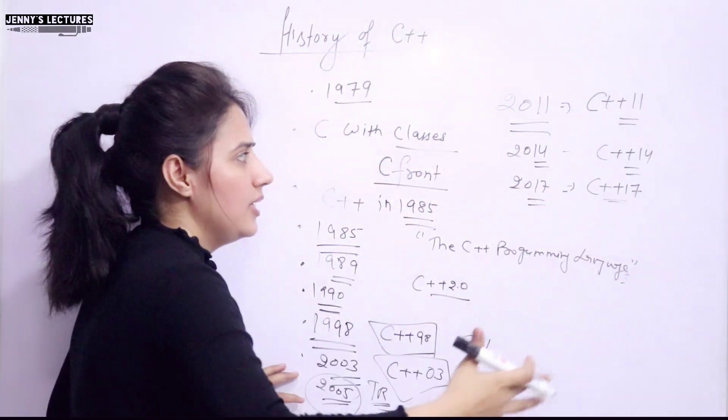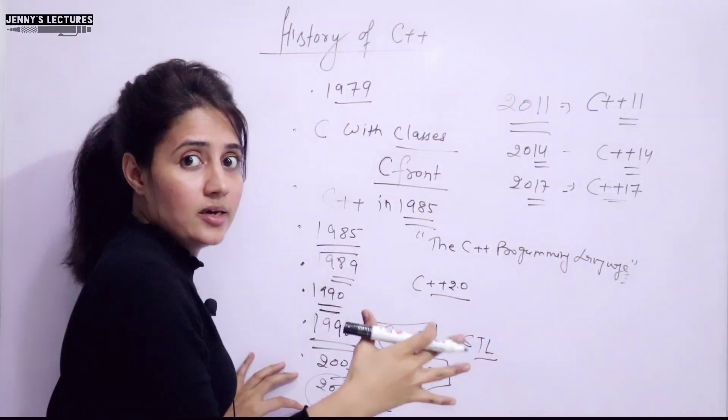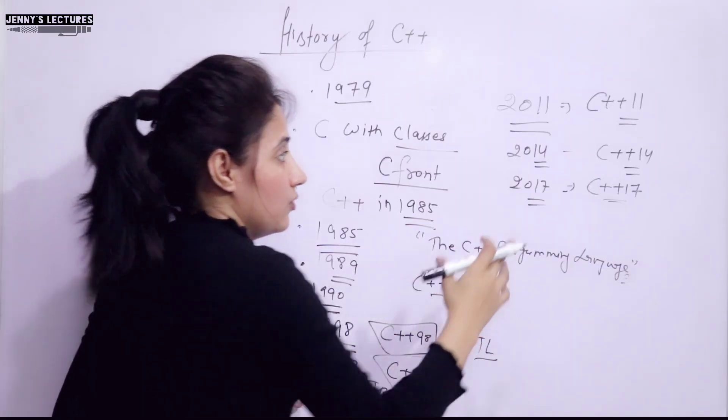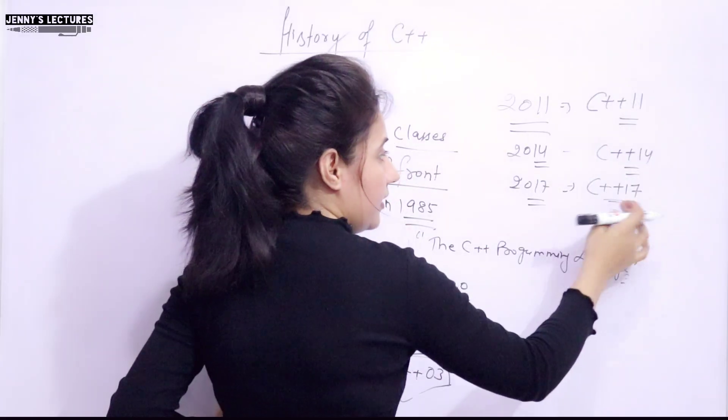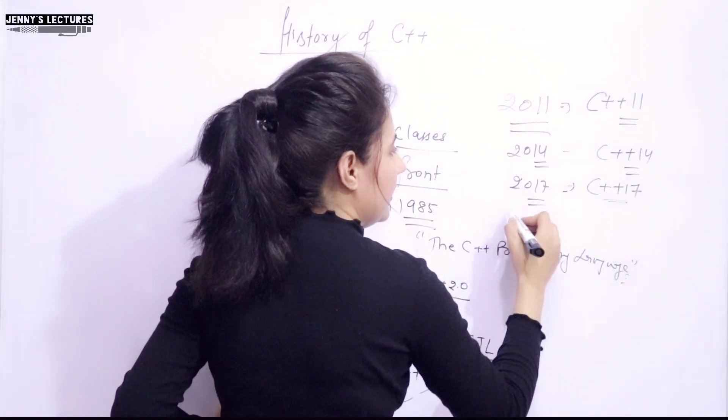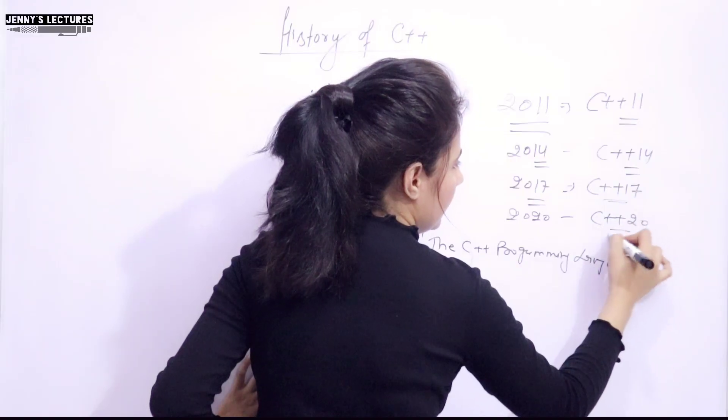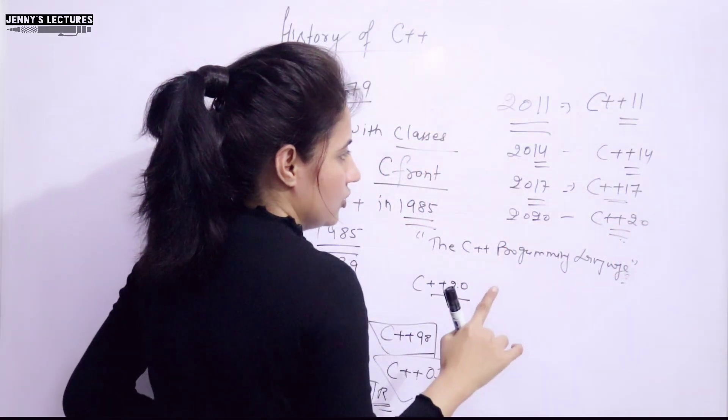And many new header files and libraries were added in this one. And some obsolete features, some things were removed from this version. And this was known as C++ 17. And then next in 20, C++ 20. It is the latest version of this language.